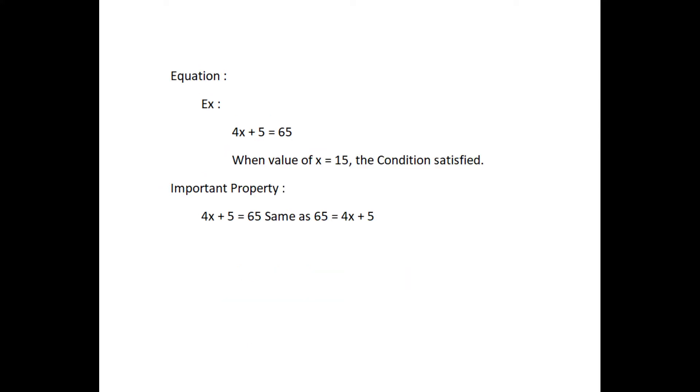Now we will see about equation. An equation is a condition on variable. In an equation, there is always an equality. The equality sign shows that the value of the expression to the left of the sign is equal to the value of the expression to the right of the sign. For example, 4x plus 5 equal to 65. In short, we know an equation is a condition on the variable. The condition is that two expressions should have equal value.